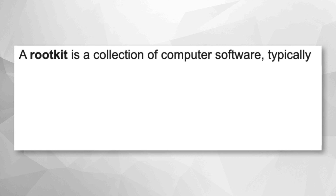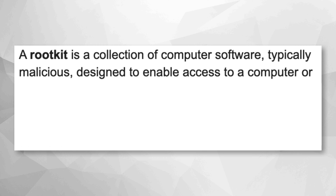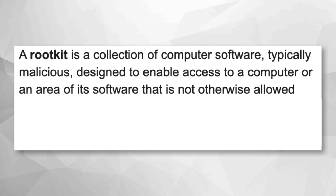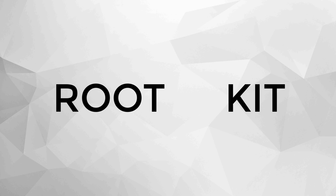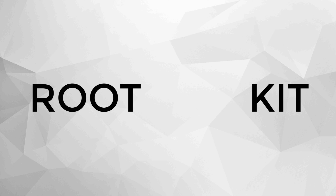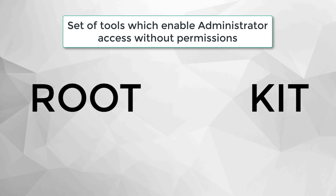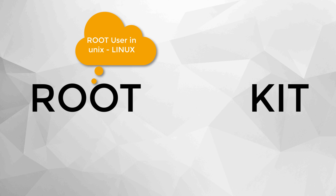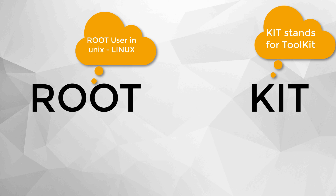Let's start with a simple definition of rootkit. A rootkit is a computer program designed to provide continued privileged access to a computer while actively hiding its presence. The term rootkit is a combination of two words: root and kit. Originally, a rootkit was a collection of tools which enable admin level access to a computer or a network. Root refers to the admin level access or the root account on Unix and Linux systems.